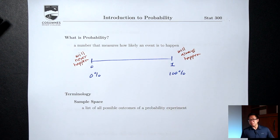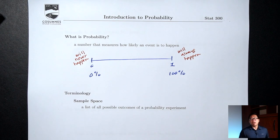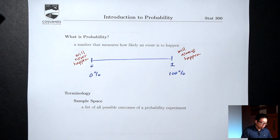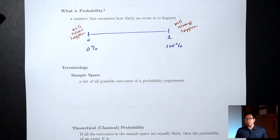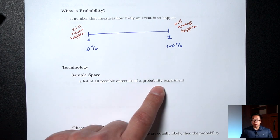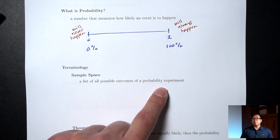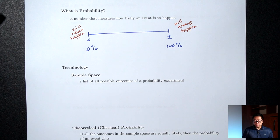If you ask me, 'Are you going to the gym today?' — 20%. So how do we actually compute probability? Let me introduce some terminology. Sample space: a sample space is a list of all the possible outcomes of a probability experiment. What do I mean by probability experiment? I just mean any process where we don't know for sure what's going to happen.